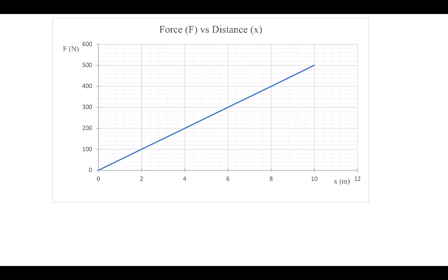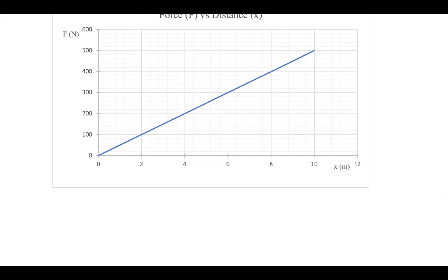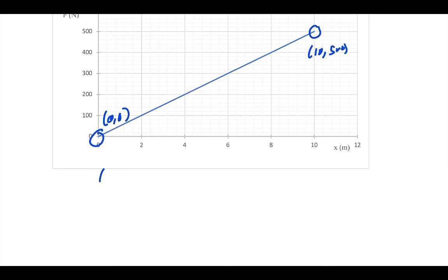Here I have a graph of something called force versus distance. Force is in this unit called the Newton, meters. If I just pick two points, zero, zero is available. I definitely want to take that one when I have that. I'm going to go all the way to the end here to 10, 500. So my final point is 10, 500. My initial is 0, 0.